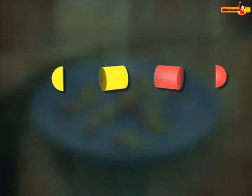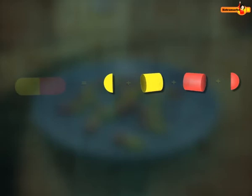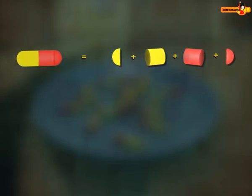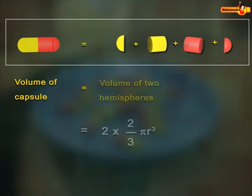So to find the volume of the capsule, we need to add the volumes of all objects used to prepare the capsule. Therefore, the volume of capsule is equal to the sum of volumes of two hemispheres and two cylinders.